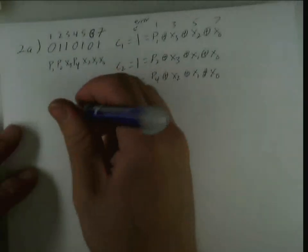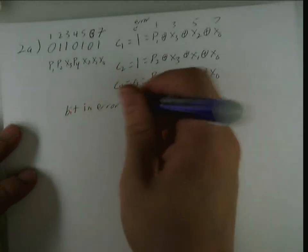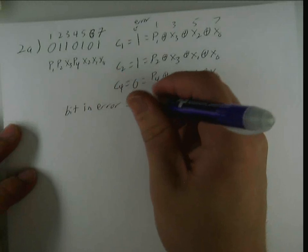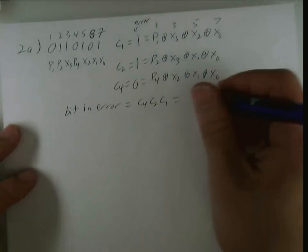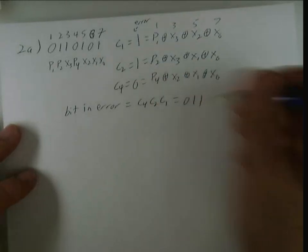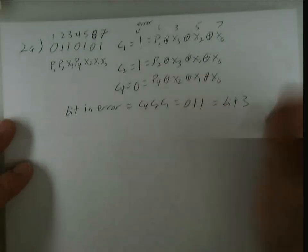So, bit in error equals c4, c2, c1, just like any binary code. And, it's just 0, 1, 1, which equals bit 3. So, we need to correct bit 3.